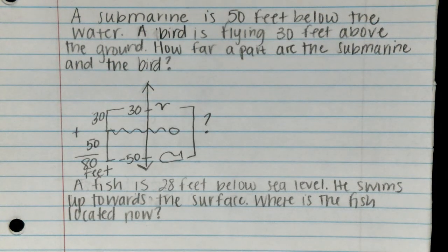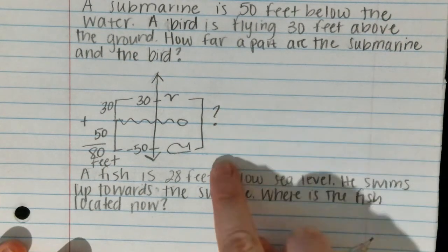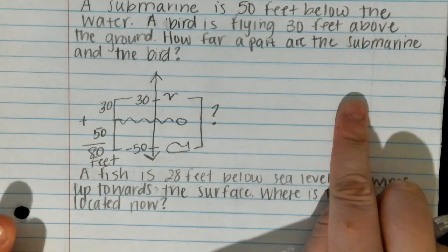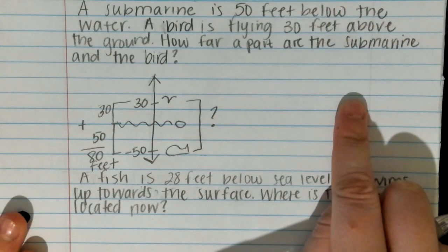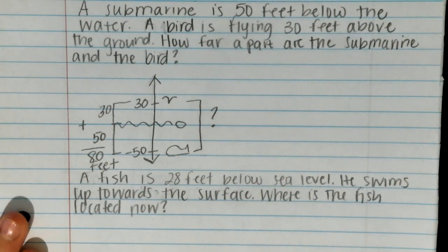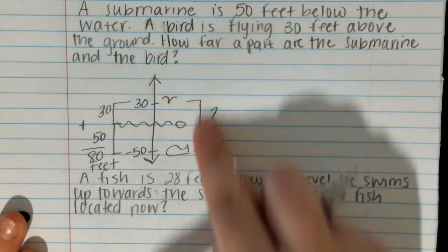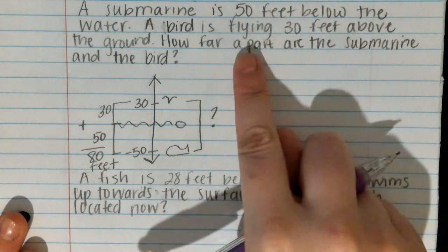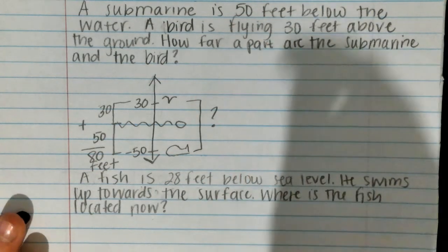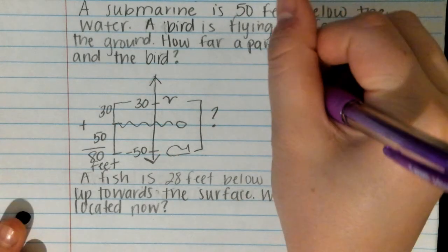When figuring out how far apart something is, you can always use a picture like this, but we can also represent it with an expression. I always do the big number minus the small number, because how far apart means subtraction, and we always subtract big minus small.